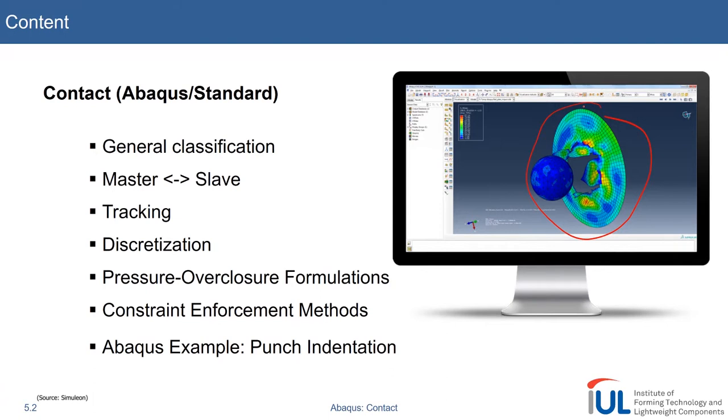Sometimes some of the formulations will fail under certain circumstances. Pressure overclosure formulation is the type that relates the penetration to a certain penalty contact force that is generated by the system to enforce the contact. We'll talk about this in more detail later.